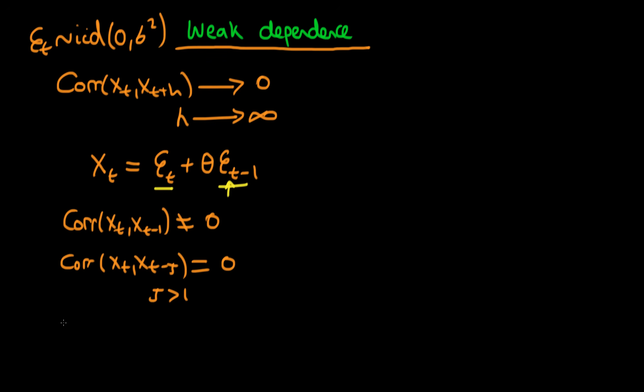Another example of a weakly dependent process is an AR(1) process, which is auto-regressive of order 1. Don't worry if you don't know what these processes are - we'll cover them in future videos. I wanted to bring them in as examples of classically weakly dependent series. An AR(1) process is X_t equals ρ times X_{t-1} plus some error ε_t, where ε_t satisfies the condition above.